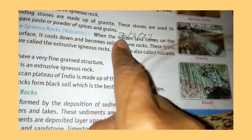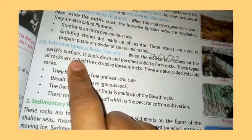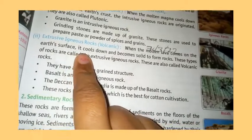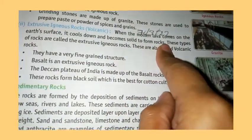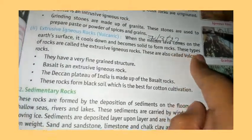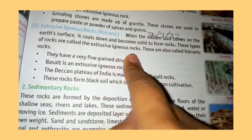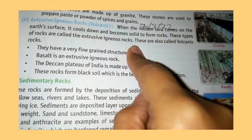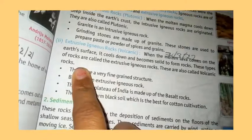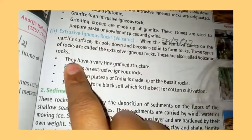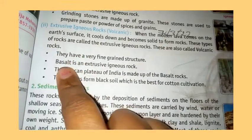When the mountain lava comes on the earth's surface, the lava cools down and forms solid rock. These types of rock are called extrusive igneous rock. They are also called volcanic rock. They have a very fine granitic structure.